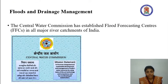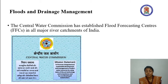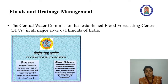Coming to flood management, the Central Water Commission has established flood forecasting centers in almost all major river catchments in India, covering 62 interstate river basins, 132 water level flood forecasting centers, and 25 inflow flood forecasting centers. The hydrological and hydrometeorological data collected from nearly 700 stations are being analyzed and flood warning messages are issued generally 24 to 48 hours in advance.